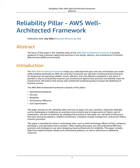The AWS Well-Architected Framework is based on five pillars: Operational Excellence, Security, Reliability, Performance Efficiency, and Cost Optimization. This paper focuses on the Reliability Pillar and how to apply it to your solutions. Achieving reliability can be challenging in traditional on-premises environments due to single points of failure, lack of automation, and lack of elasticity.